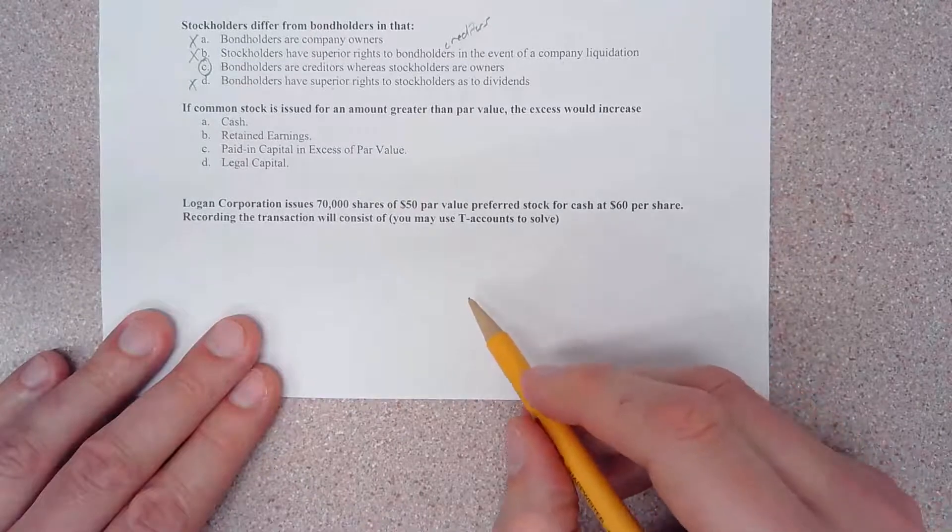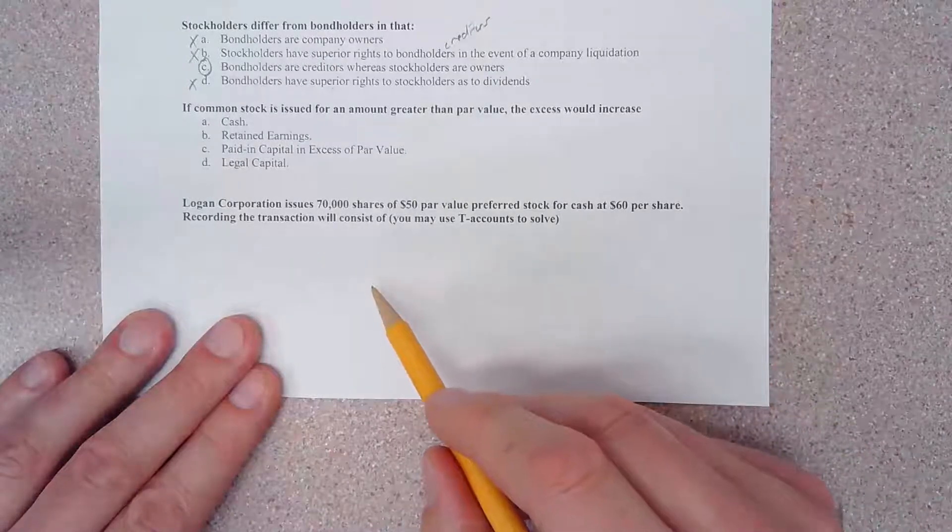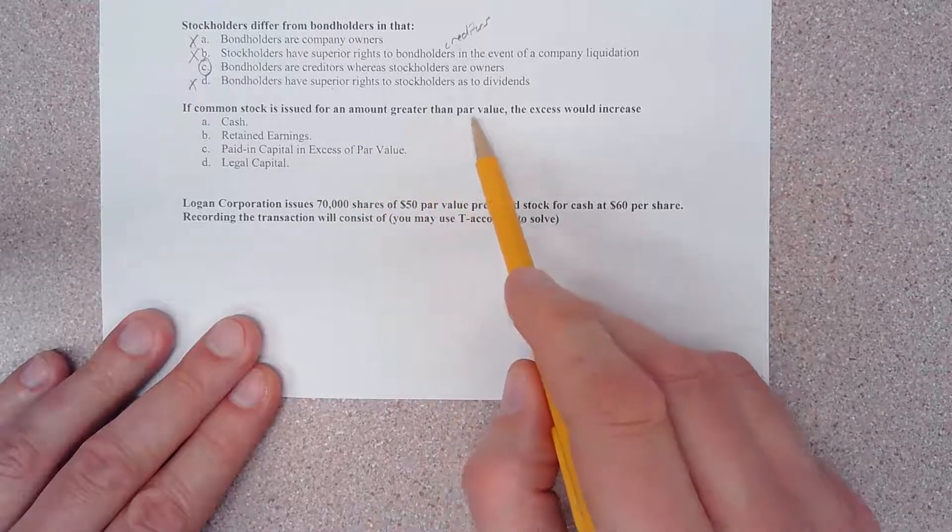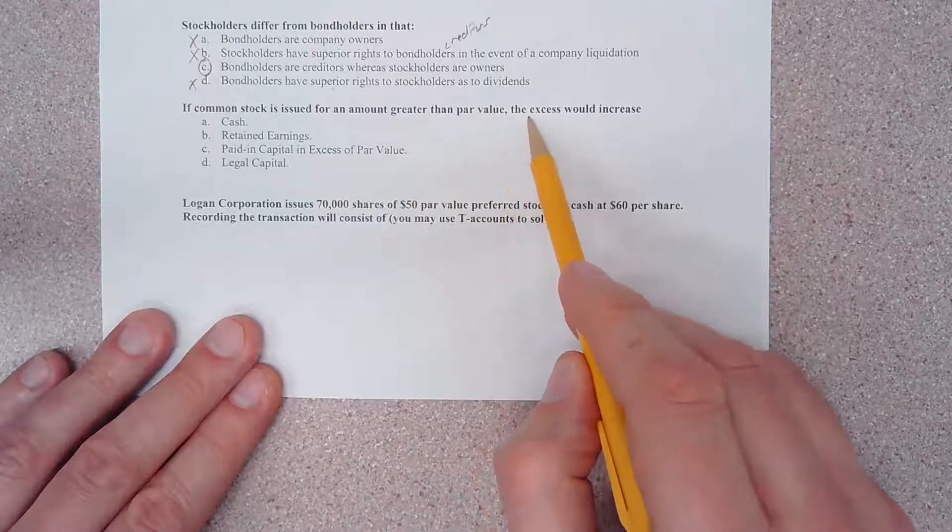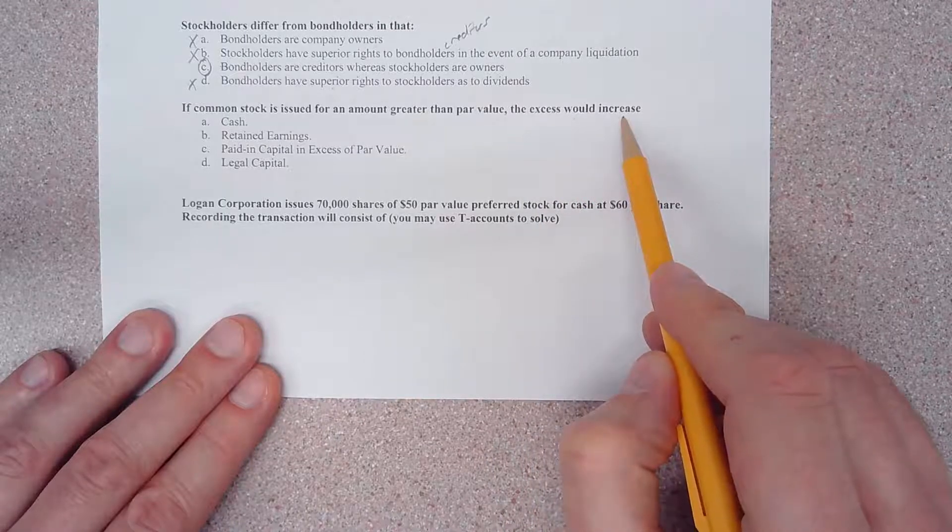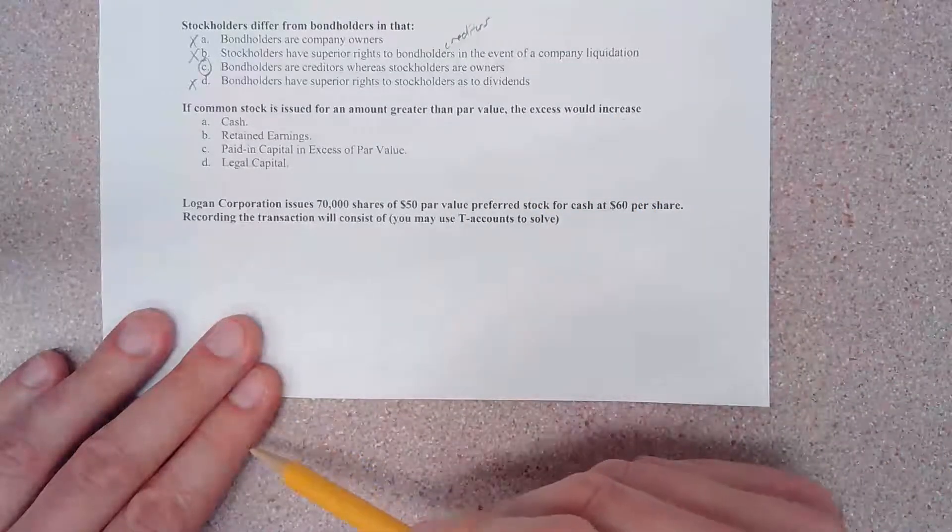Moving along, it says if common stock is issued for an amount greater than par value, the excess would increase what?